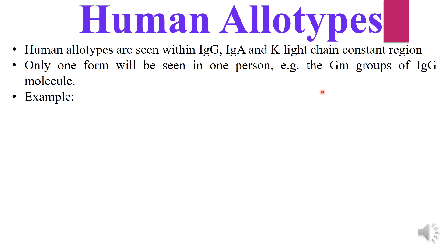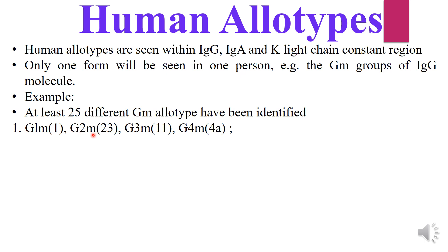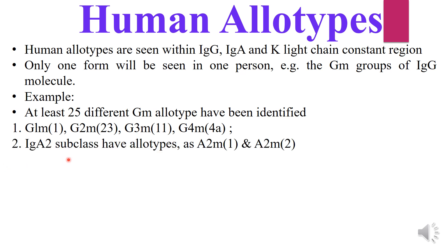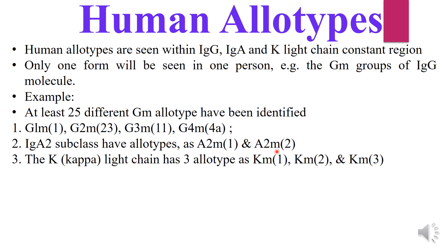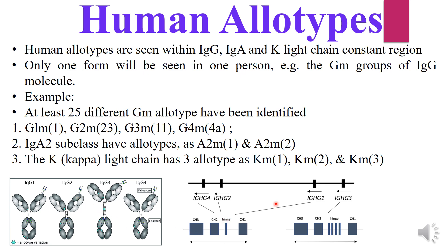There are at least 25 different immunoglobulin G allotypes identified. They are designated as G1M1, G2M2, G3M11, and G4M4A. Here G stands for the immunoglobulin class, the number indicates the subclass, M is for marker, and the number in brackets indicates the allele number. Immunoglobulin A2 subclass has allotypes A2M1 and A2M2, whereas the kappa light chain has three allotypes: Km1, Km2, and Km3. These are immunoglobulin subclasses with various alleles inherited from our parents.